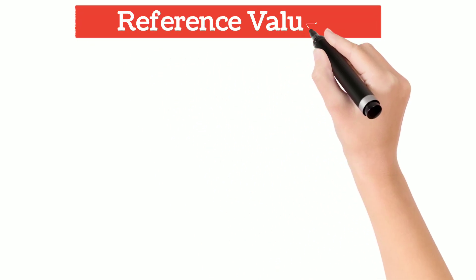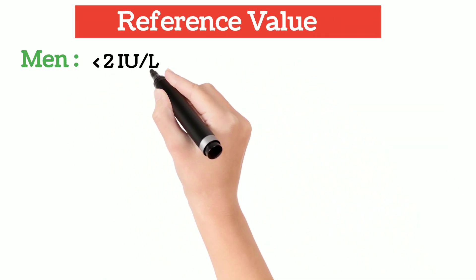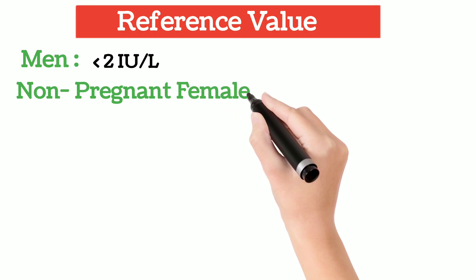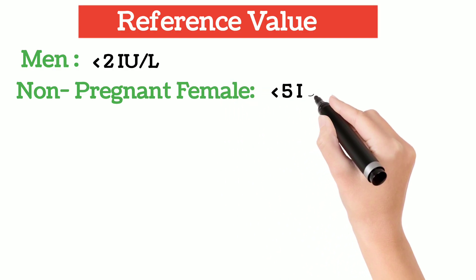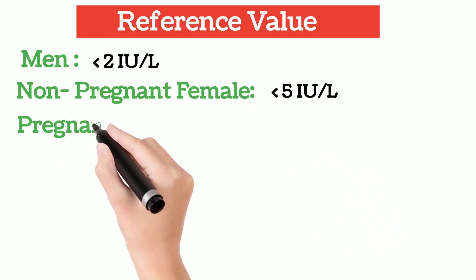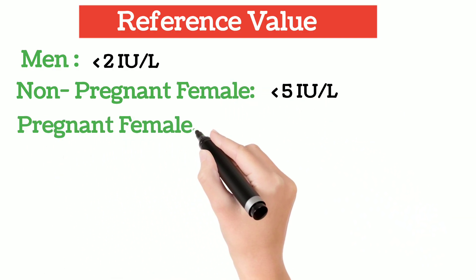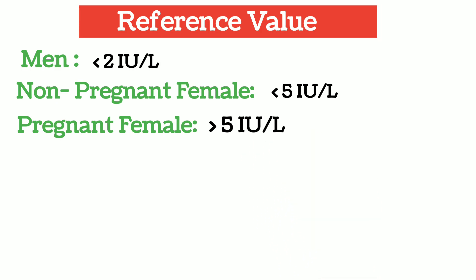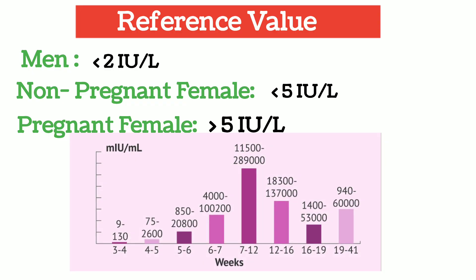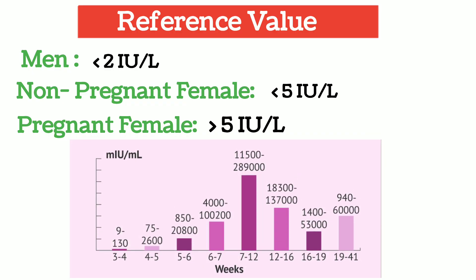For men, less than 2 international units per liter is considered the normal value. For non-pregnant females, it's less than 5 international units per liter. But for pregnant females, 35 international units per liter are considered positive. We remember that these values change and increase with the time of pregnancy, as you can see in the chart. The maximum value is reached mostly up to 12 weeks of pregnancy.